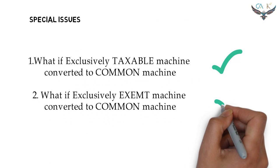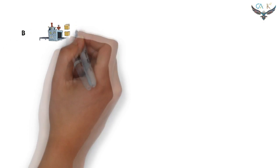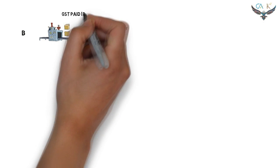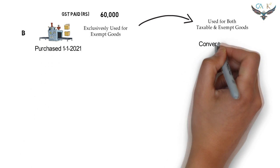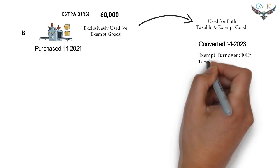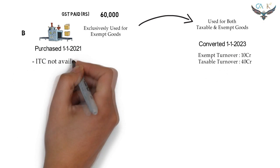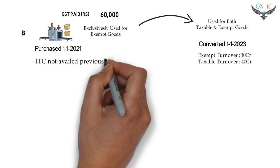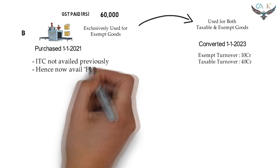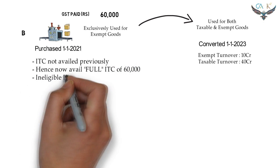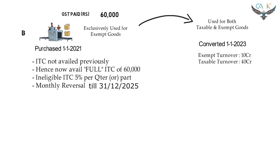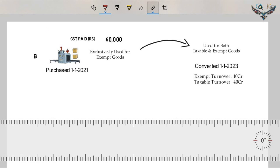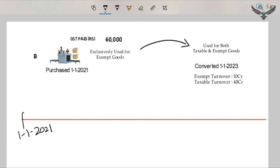Now let us see the second special issue through another example. Machinery B, which was originally used for making exempt goods, has now been converted to be used for both taxable as well as exempted goods. Let us assume the machinery was purchased on 1st January 2021 and converted on 1st January 2023. Since the machinery was previously used for exempt goods, ITC was not available previously. Before going to the calculation part, we will understand the logic behind these calculations.